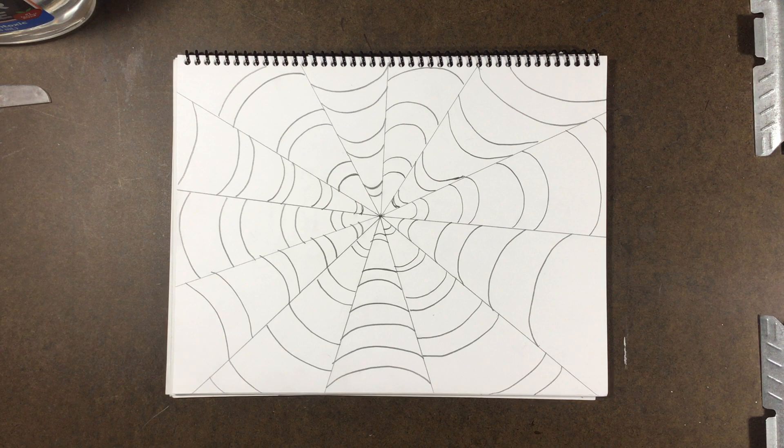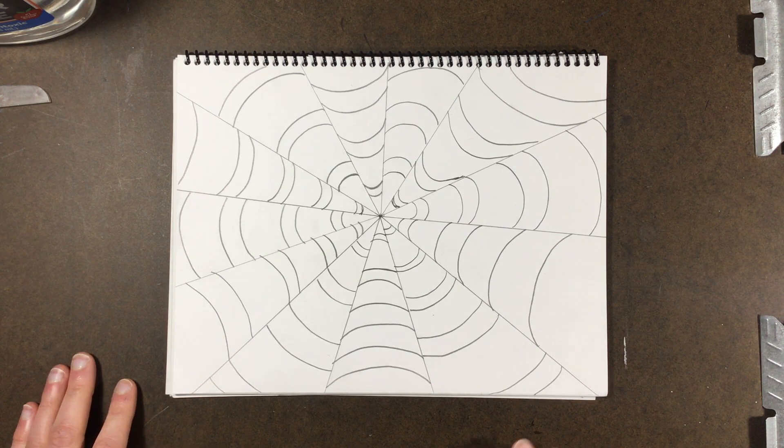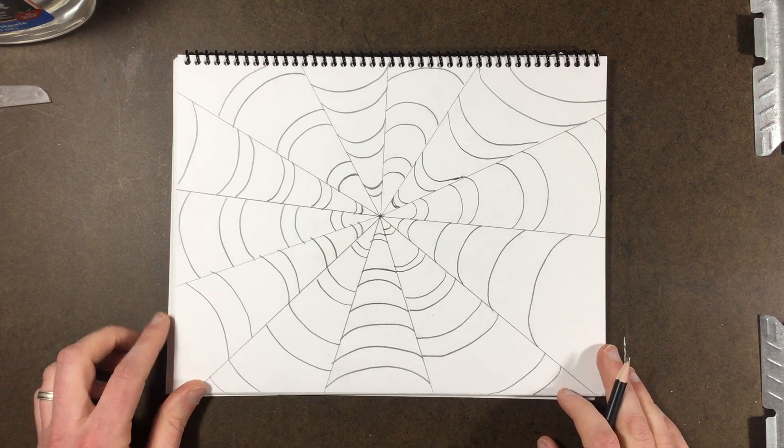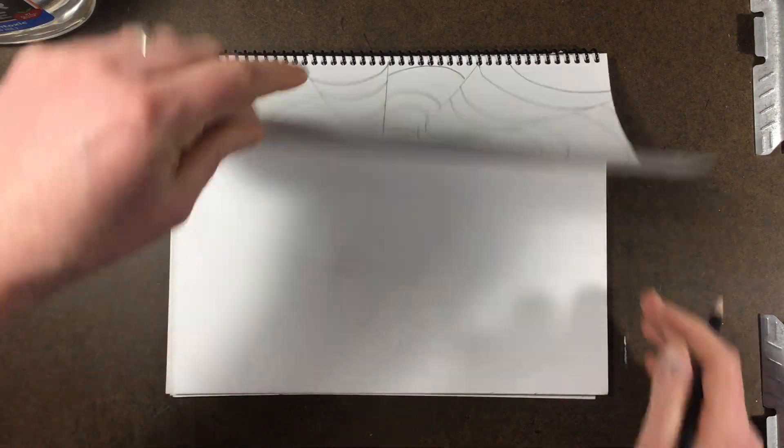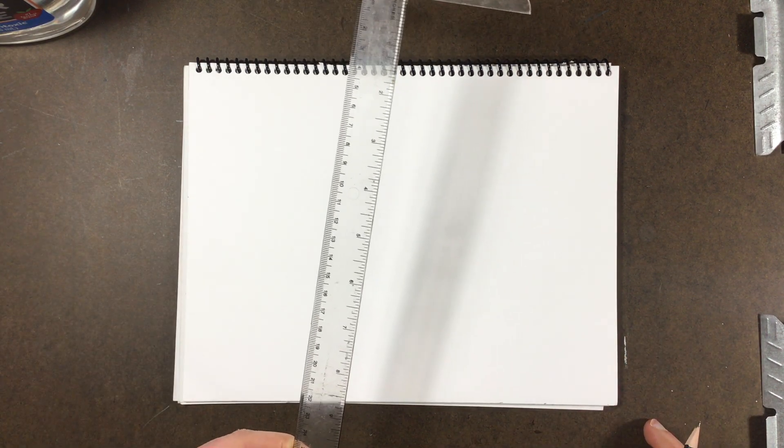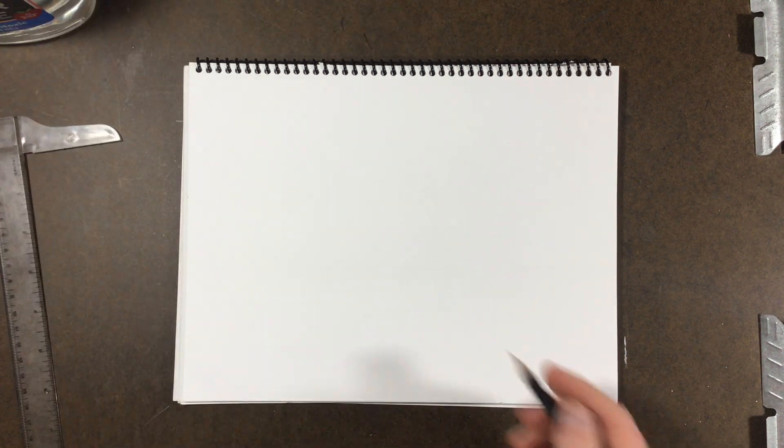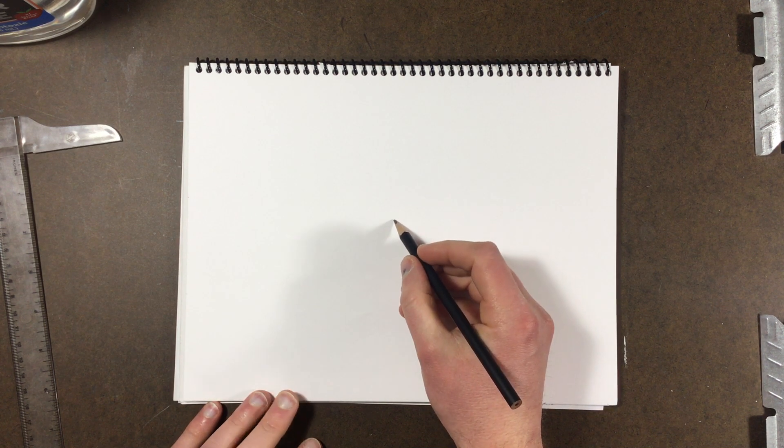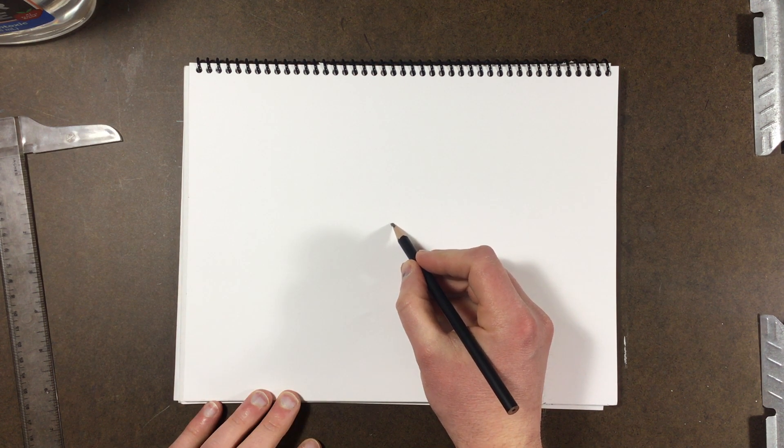What we're going to do first is get a new piece of paper. The only thing you need is a pencil, and having a ruler is helpful but not totally necessary. How we're going to start this drawing is we're going to put a point in the center.